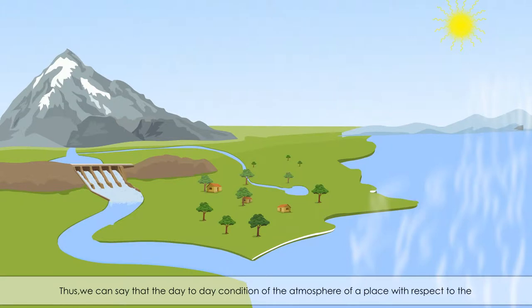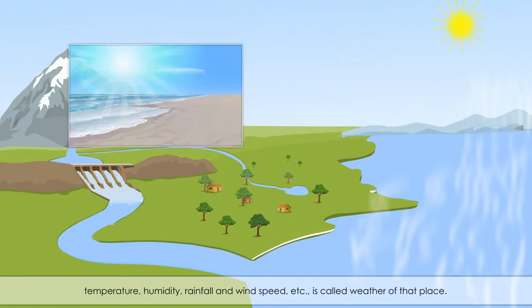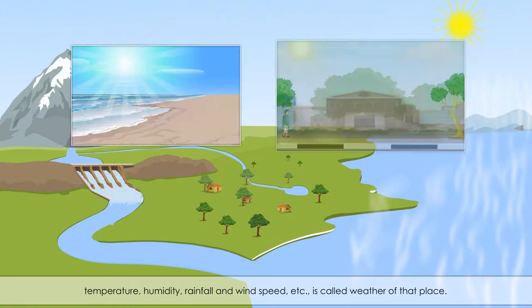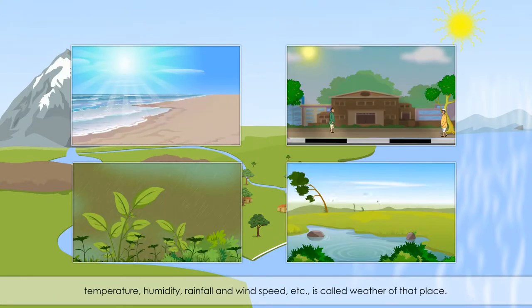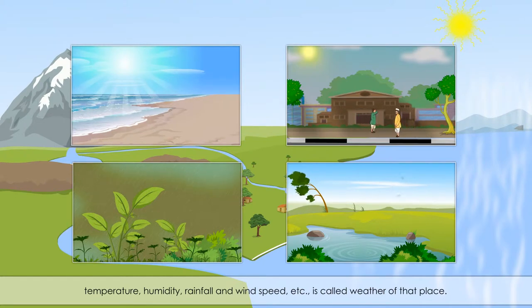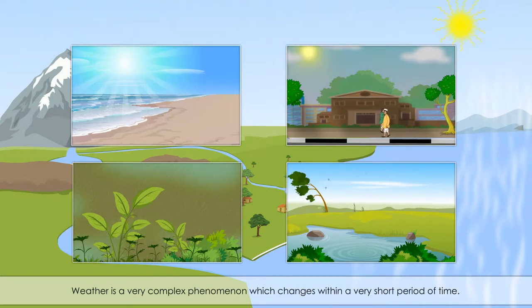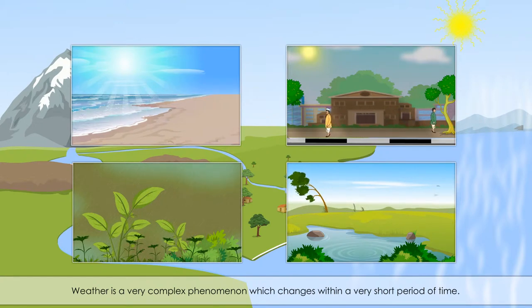Thus, we can say that the day-to-day condition of the atmosphere of a place with respect to the temperature, humidity, rainfall and wind speed, etc. is called the weather of that place. Weather is a very complex phenomenon which changes within a very short period of time.